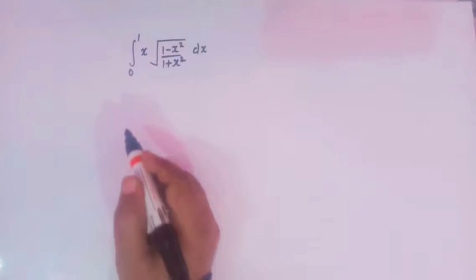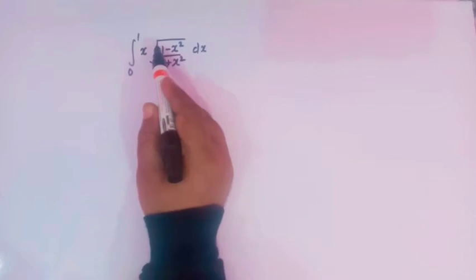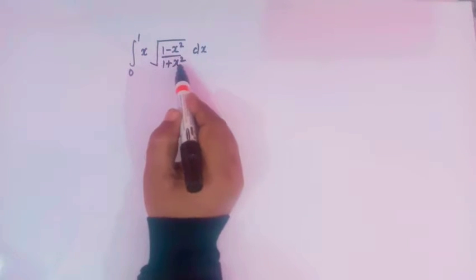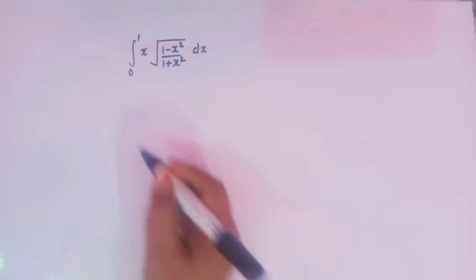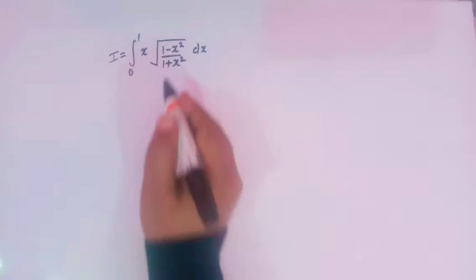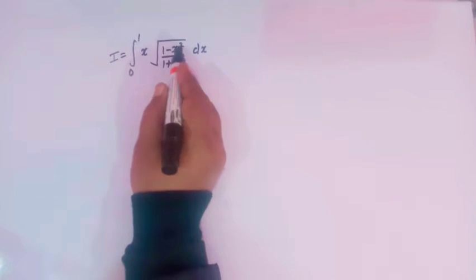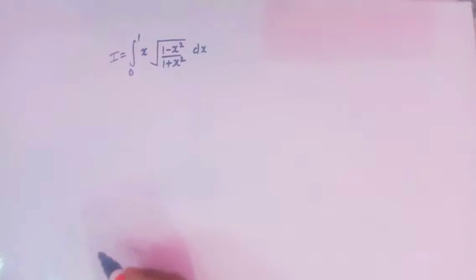Hello viewers. In today's class we are going to solve one important definite integral: from 0 to 1, x multiplied by square root of 1 minus x square, over 1 plus x square. Let us call this integral as I. The integrand is x times square root of 1 minus x square over 1 plus x square, and we should search for an appropriate substitution, because a proper substitution can make this integral easy.